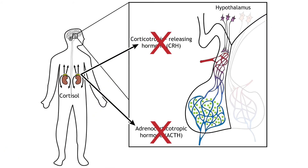Once the stress response has been initiated and cortisol enters the circulation, cortisol itself is able to act on the hypothalamus and pituitary and inhibit production of CRH and ACTH. This is called a negative feedback loop. The active hormone, cortisol, can shut off its own production. Negative feedback is possible because neurons in the hypothalamus and pituitary express glucocorticoid receptors that are activated by cortisol.